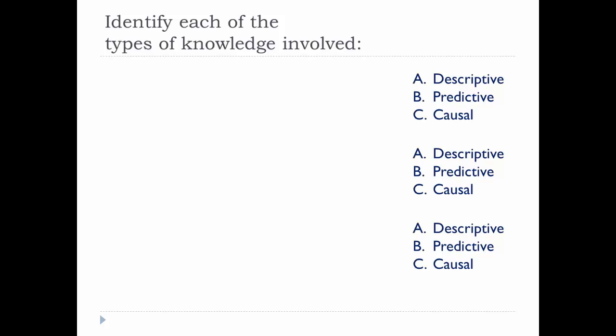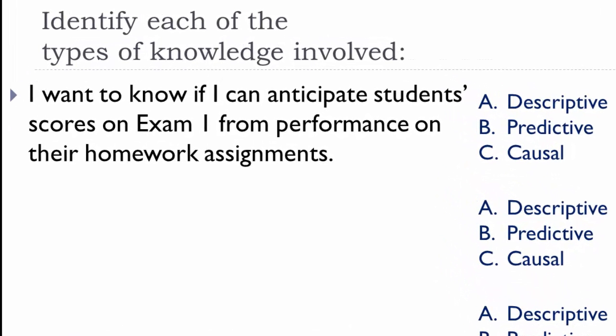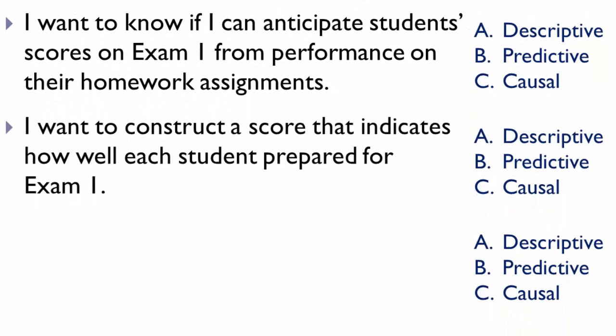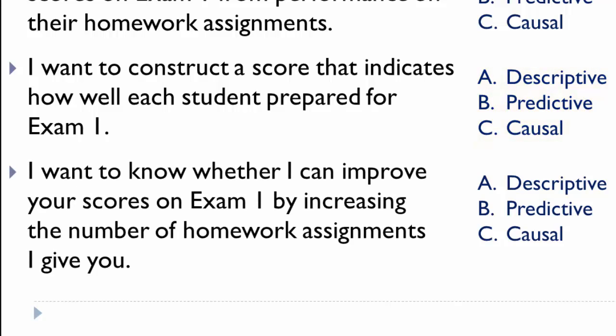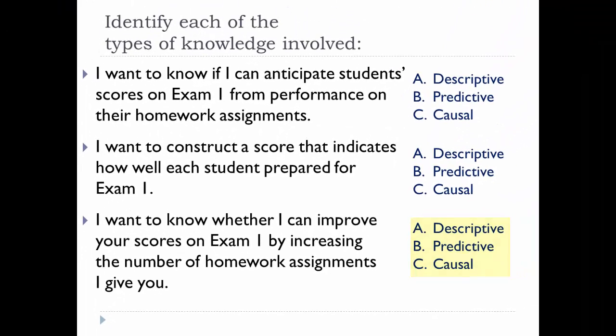Just a quick test to see if you can correctly identify the types of knowledge using the homework and exam score example. I want to know if I can anticipate students' score on the first exam from performance on their homework assignments. Would that be descriptive, predictive, or causal? I want to construct a score that indicates how well each student prepared for Exam 1. What type of knowledge would that be? And I want to know whether I can improve your scores on Exam 1 by increasing the number of homework assignments I give you. What do you think here? Well, how did you do?